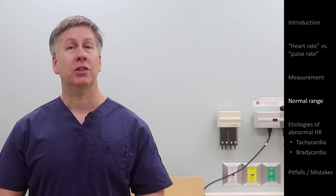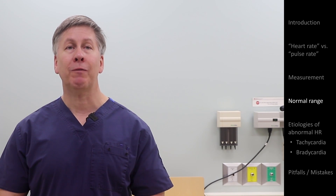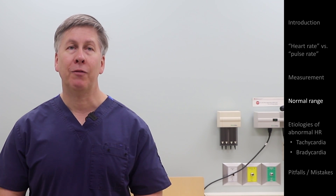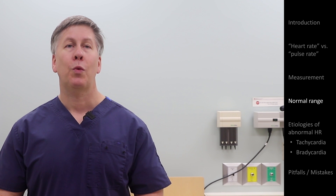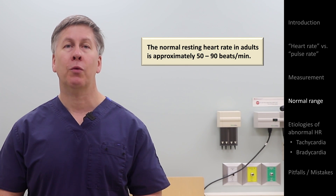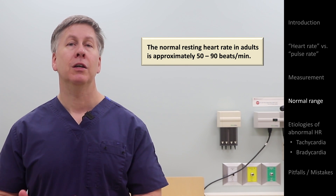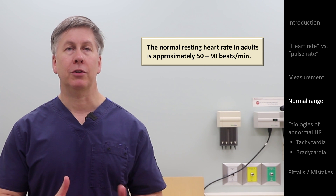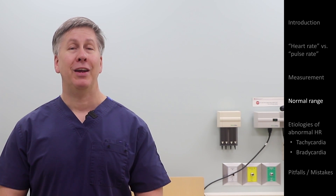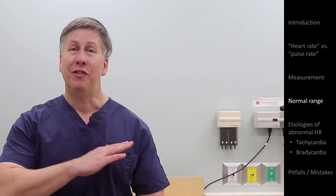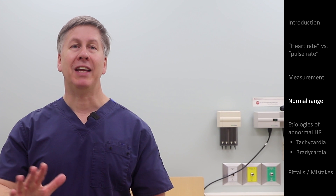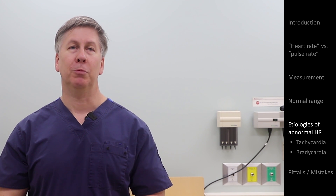So in summary, despite what the vast majority of references claim, the primary evidence is most consistent with a normal resting heart rate range in adults of 50 to 90 beats per minute. Now, with that out of the way, let's focus on deviations from normal. An unusually fast rate is called tachycardia.